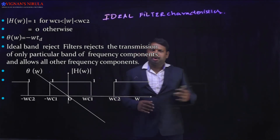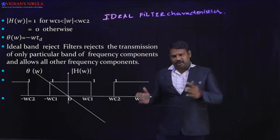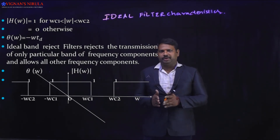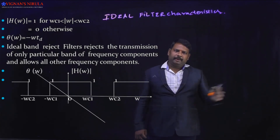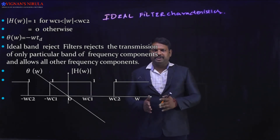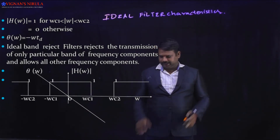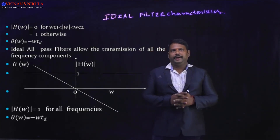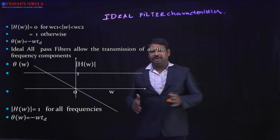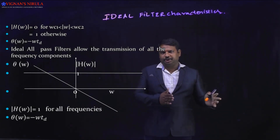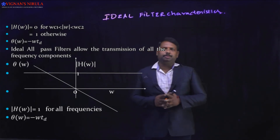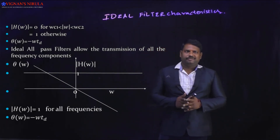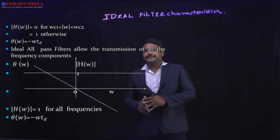The ideal band rejection filter rejects the transmission of only a particular band of frequencies and passes all other frequency components. It rejects the components between ω_c1 and ω_c2, and passes all other frequency components. The mathematical expression is: |H(ω)| = 0 for ω_c1 to ω_c2, and equals 1 otherwise, and θ(ω) = −ω·t_d. These are the expressions for the magnitude and phase spectrum of the ideal band rejection filter.